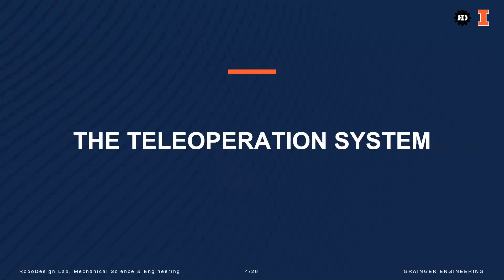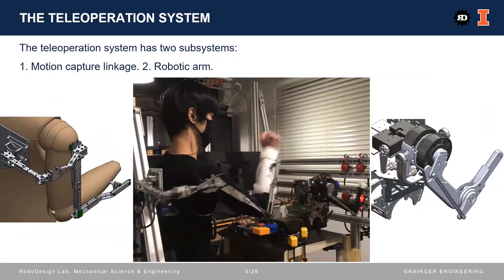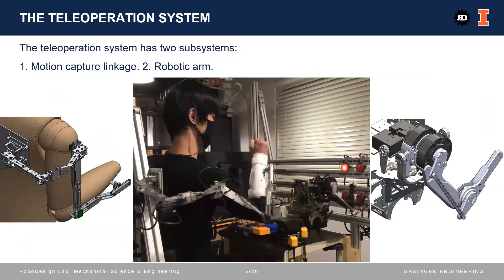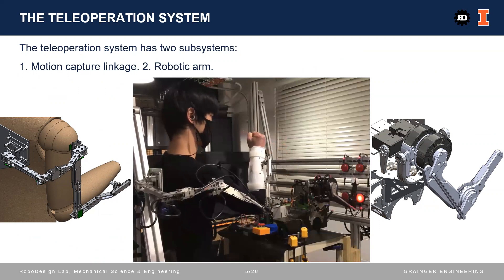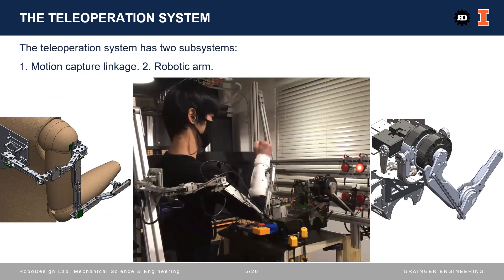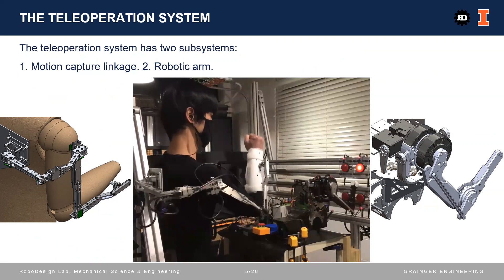Now I will introduce the teleoperation system we studied. The teleoperation system has two subsystems. The motion capture linkage, which captures the human's arm movements, and the robotic arm, which executes the human arm movements captured.